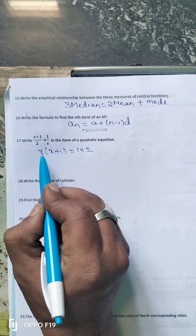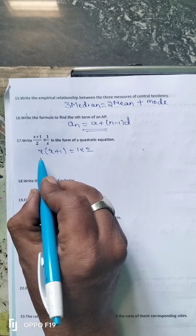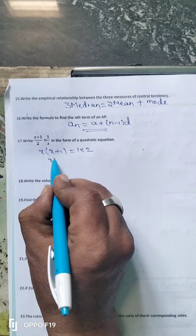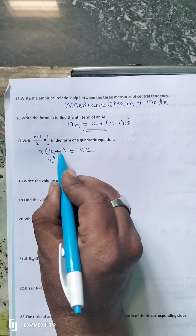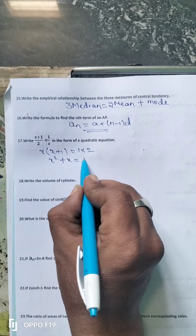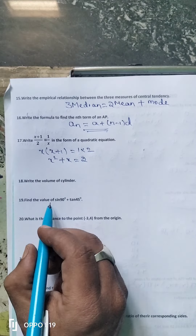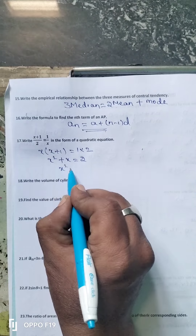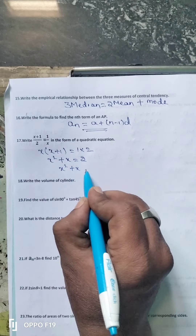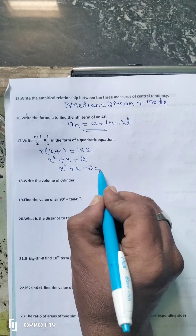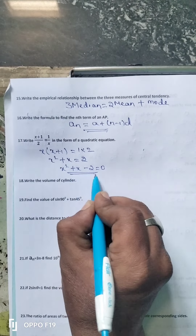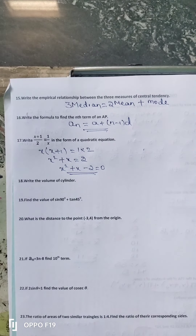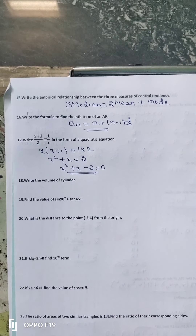Expanding: x into x gives x squared, plus x into 1 gives x, which equals 2. Bringing to standard form, x squared plus x minus 2 is equal to 0. This is the required quadratic equation.